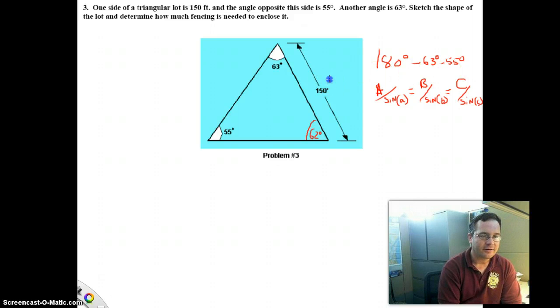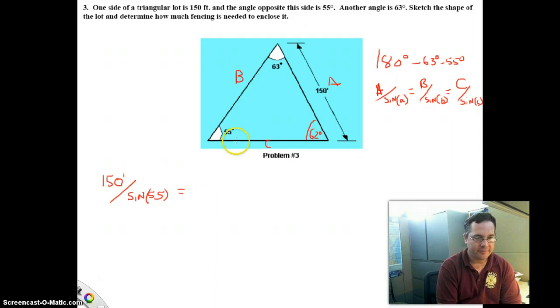So let's label some sides and set up some ratios. We'll call this side A, this we'll call side B, and this is side C. So what do we know? We know that 150 feet, which is the given length of side A, divided by the sine of 55 equals the length of side C divided by the sine of 63 equals the length of side B divided by the sine of 62 degrees.